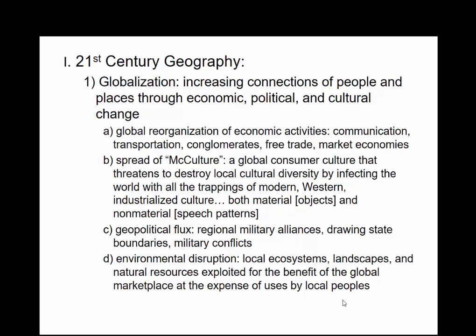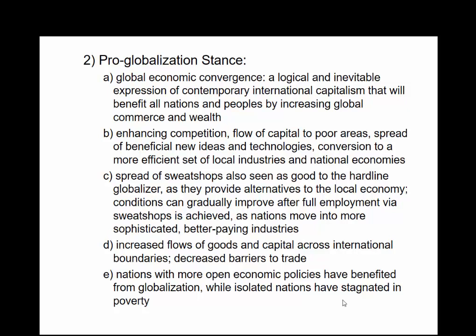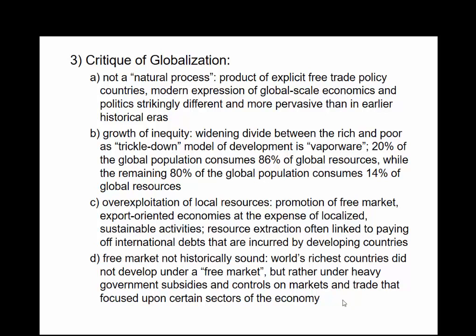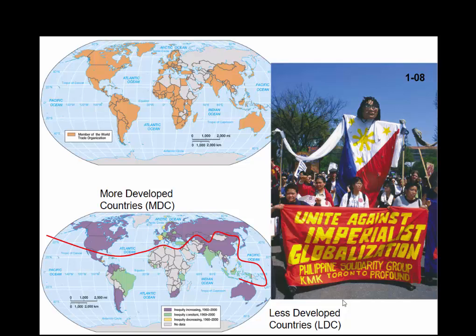Environmentalists would want to leave everything pristine, but how do we find that balance between sustainability and providing for over 7 billion people? We have pro-globalization stances — enhancing competition and capitalism — as recurring themes. Some critiques: it's not necessarily a natural process; the whole idea of trickle-down, over-exploitation of natural resources. Previously people used first, second, and third world. We don't use those anymore — instead we use developed and developing, more developed and less developed countries.